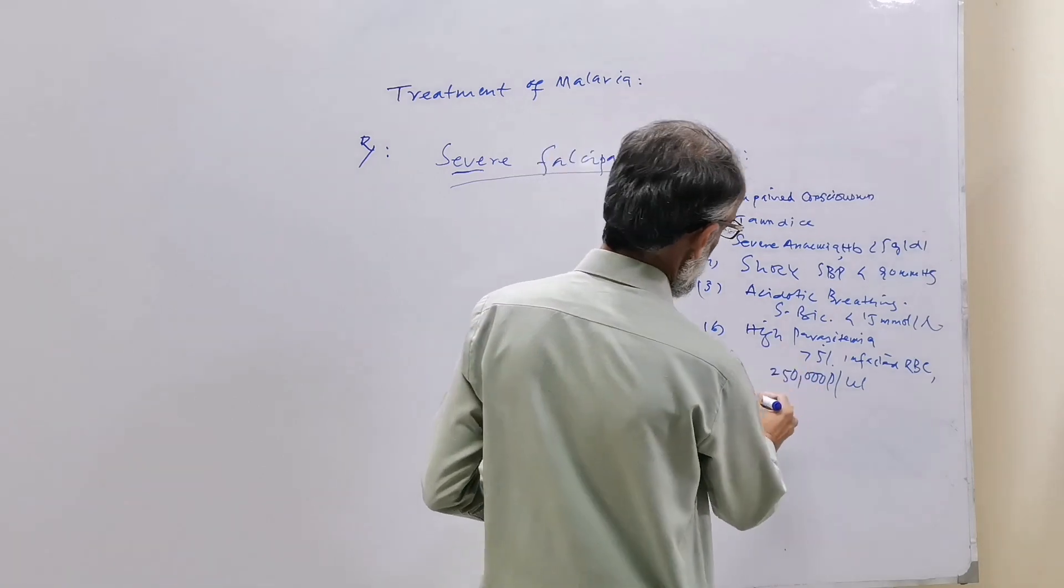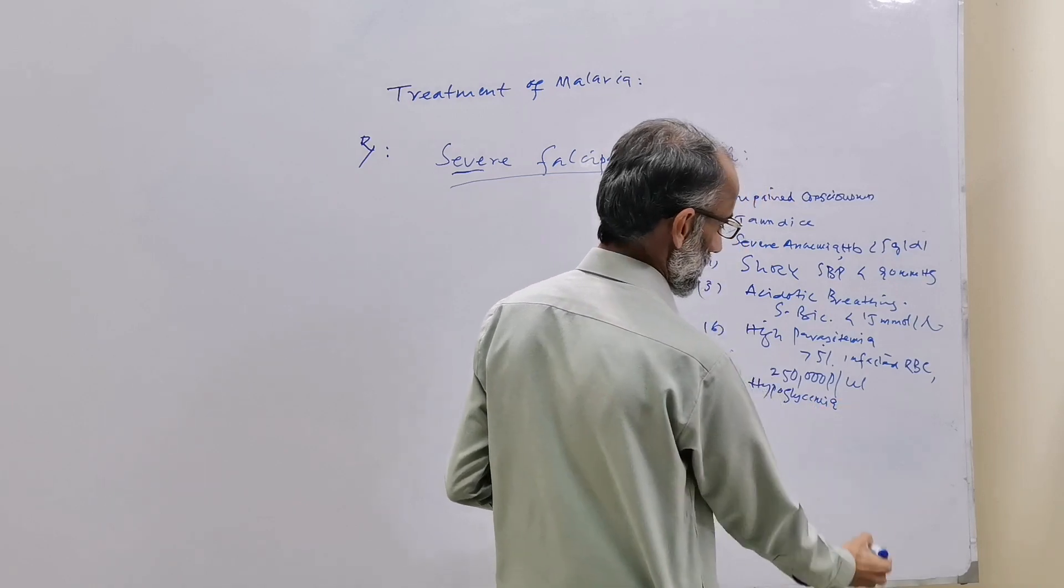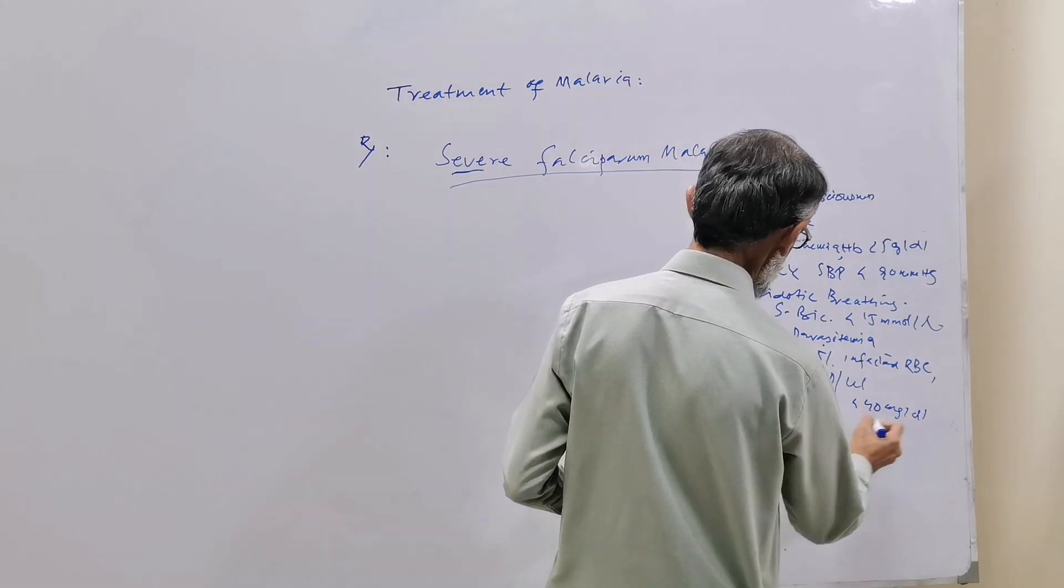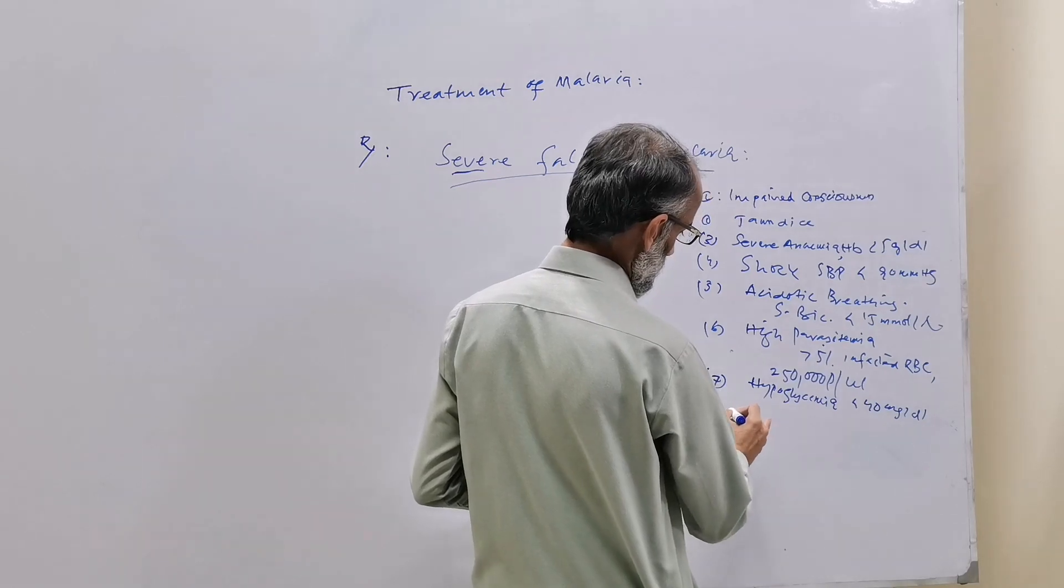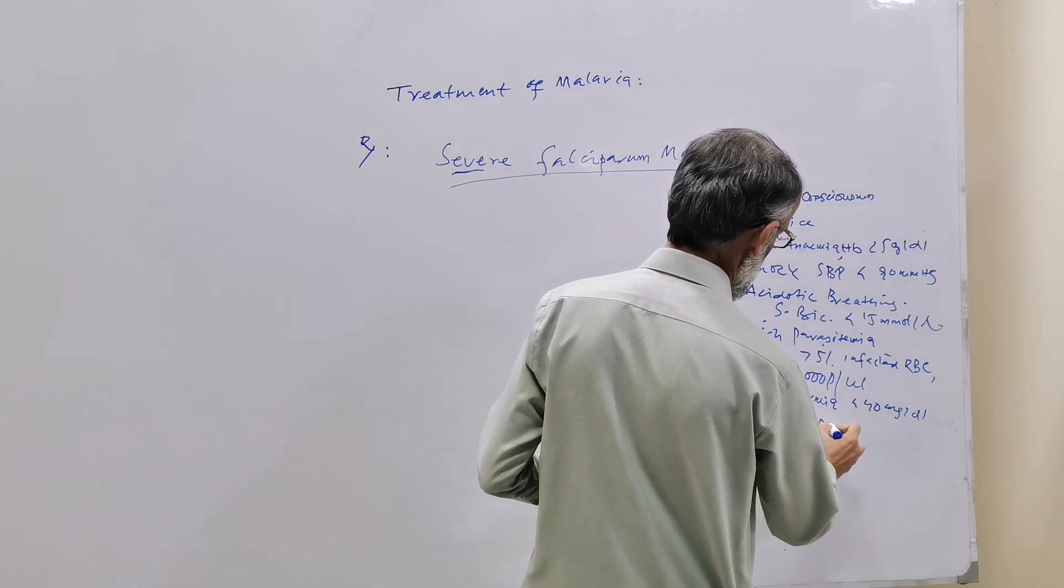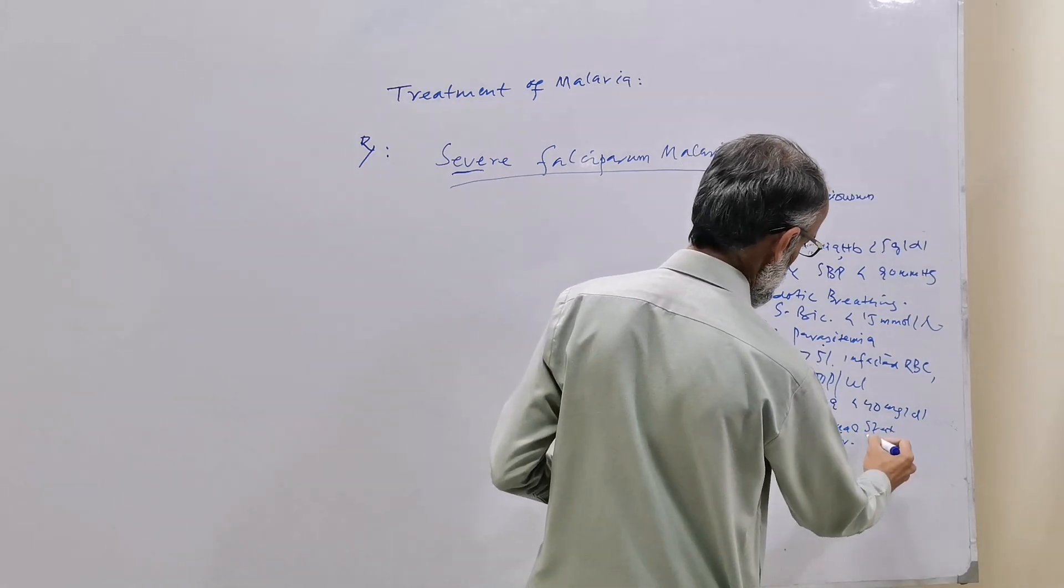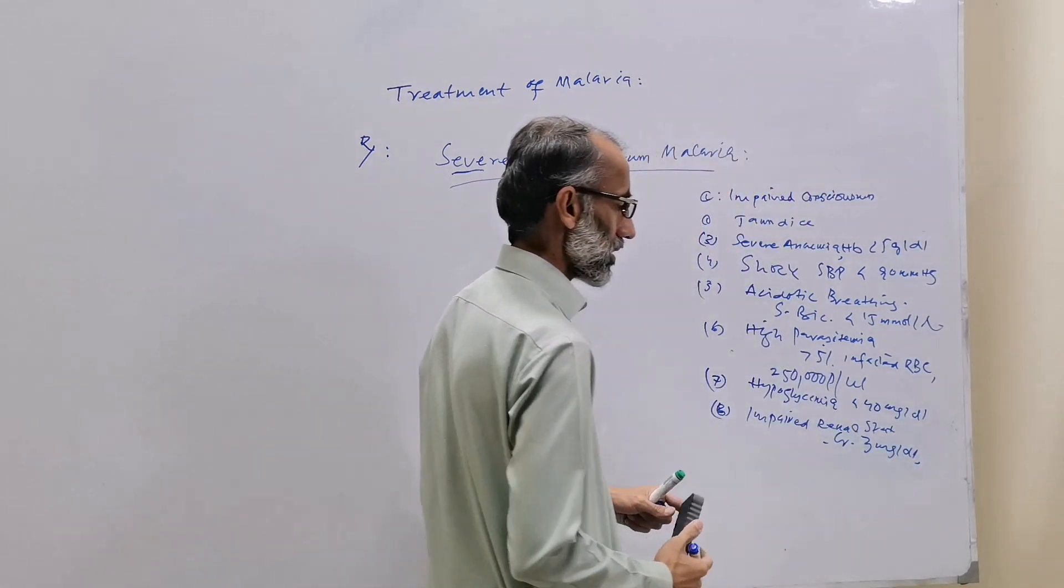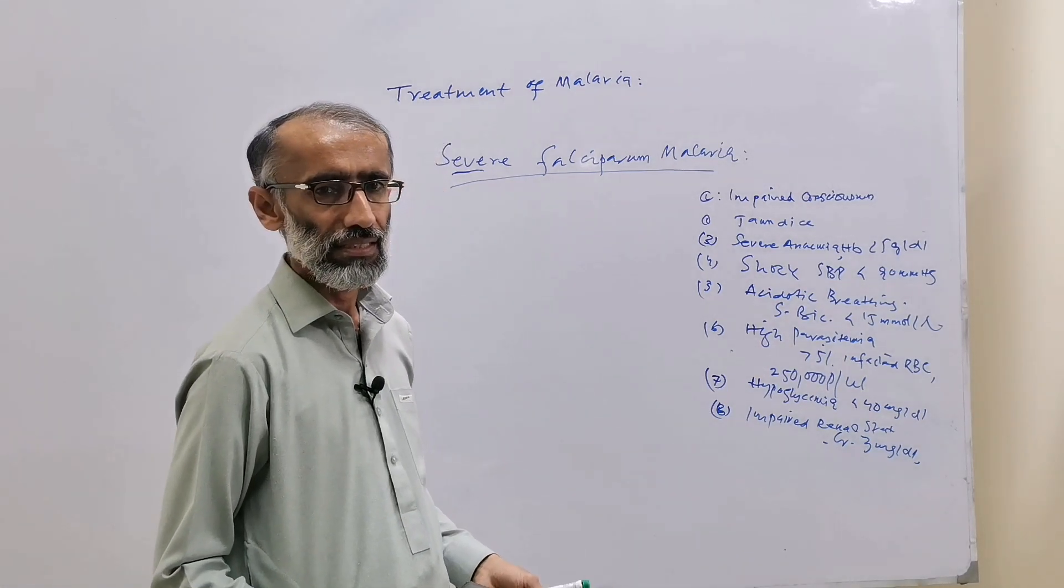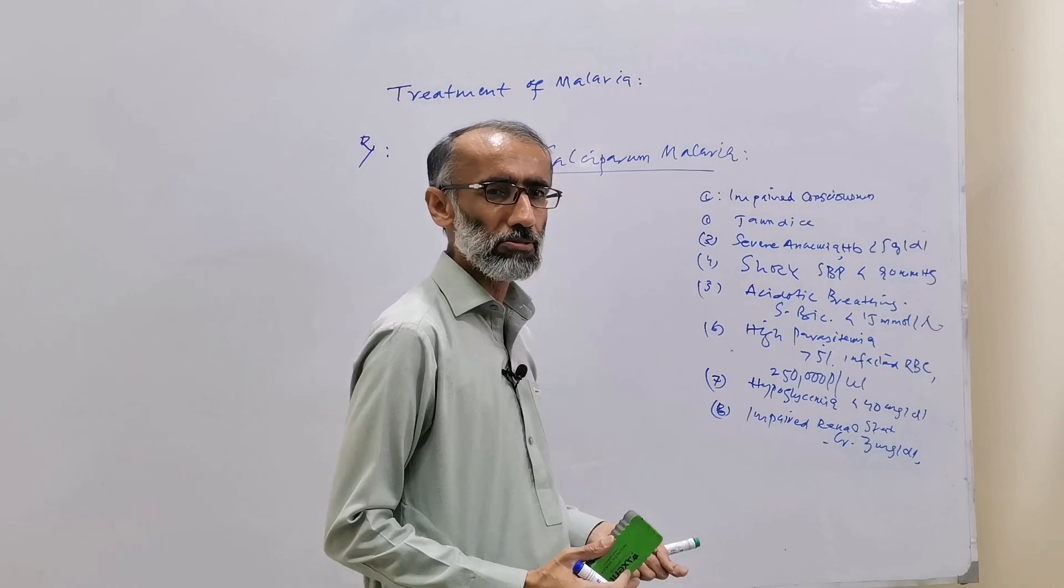Patient presenting with hypoglycemia, blood sugar less than 40 milligram per deciliter. Impaired renal function, serum creatinine greater than 3 milligram per deciliter. Patient presenting with spontaneous bleeding due to low platelets. Non-cardiogenic pulmonary edema.